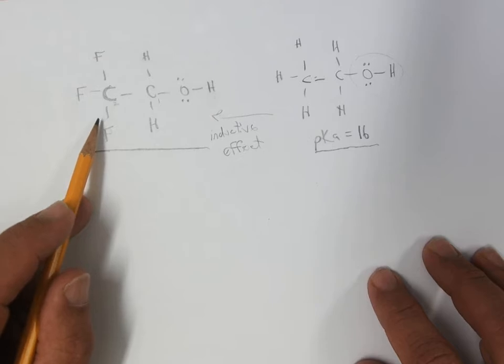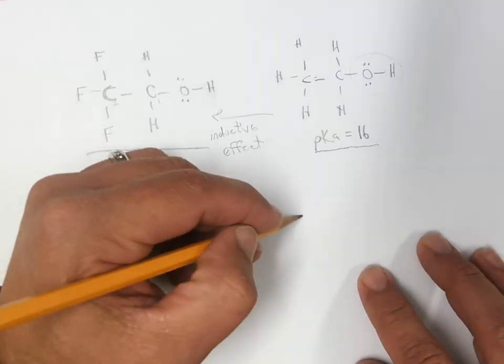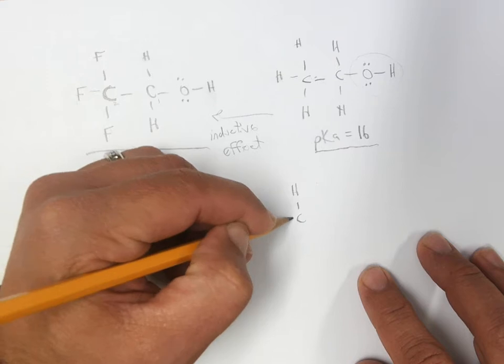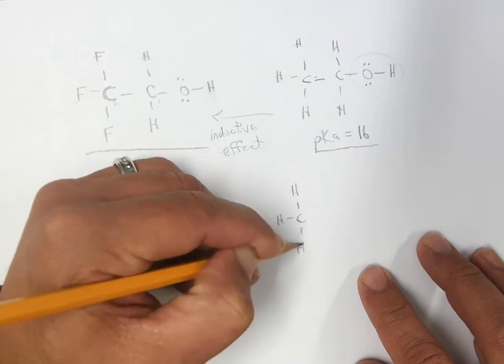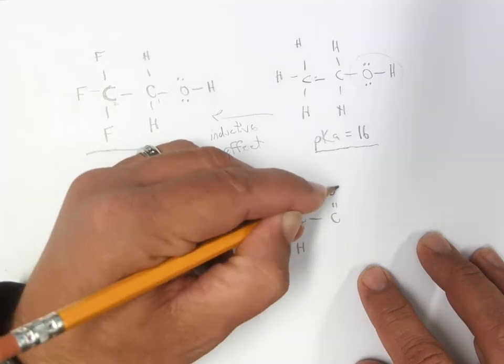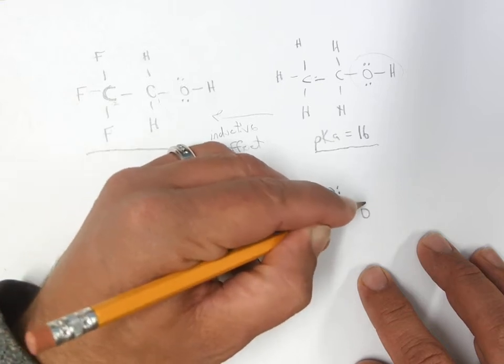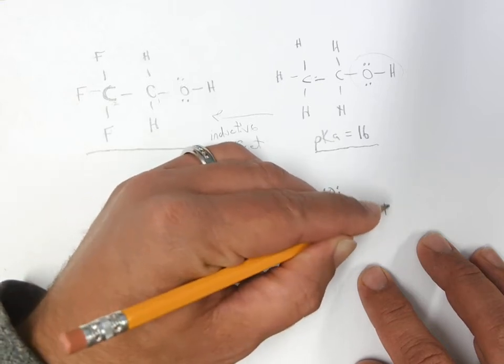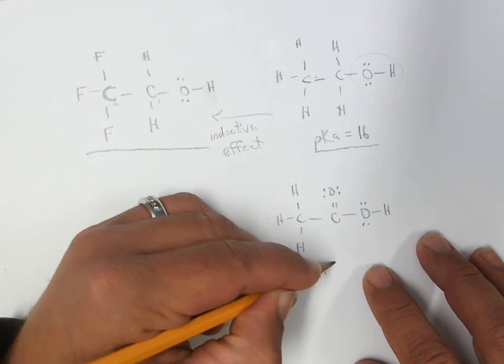So when I think about what did we have for inductive effect examples, we had very similar pair of molecules. Acetic acid was pKa 4.74.